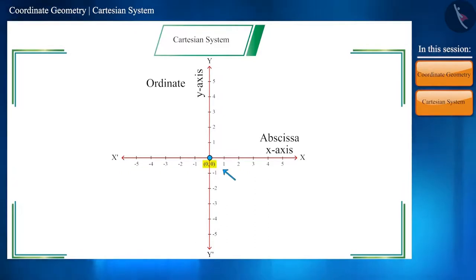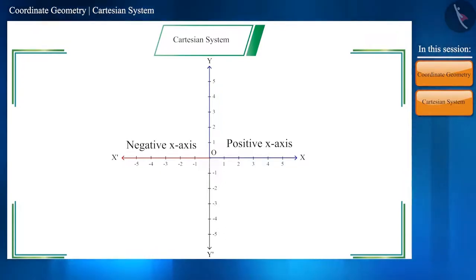The x-axis to the right of zero is called the positive x-axis, and the x-axis to the left of zero is called negative x-axis. Similarly, the upper part of zero is positive y-axis and the lower one is negative y-axis.